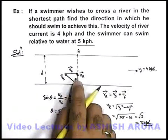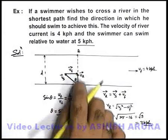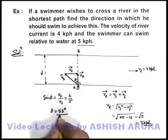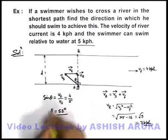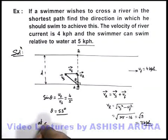And for this, that is to cross the river in the shortest path, he needs to swim at an angle 53 degrees from the direction normal, or at an angle